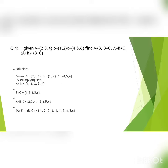The value of B plus C is 1, 2, 4, 5, 6. The value of A plus B plus C is 2, 3, 4, 1, 2, 4, 5, 6. And the value of A plus B plus B plus C is 1, 2, 2, 3, 4, 1, 2, 4, 5, 6.